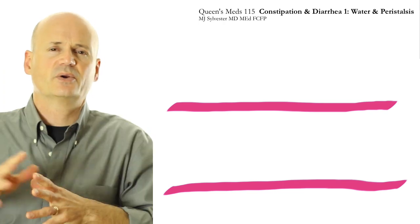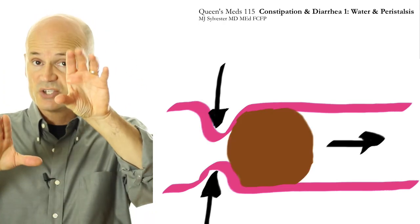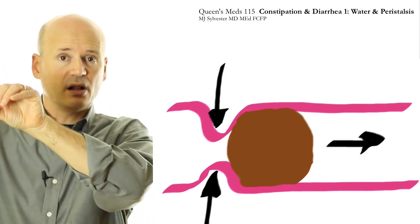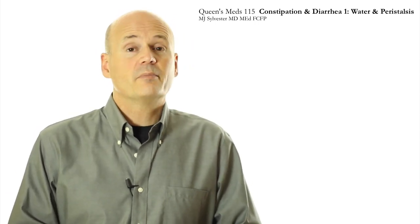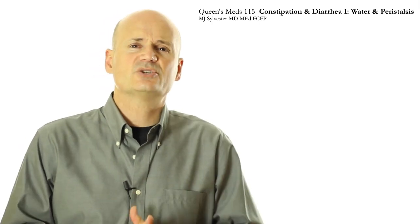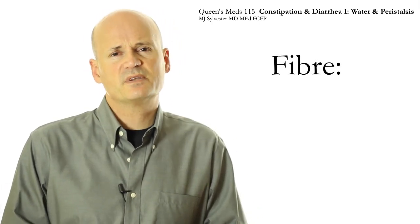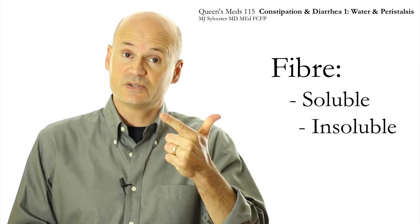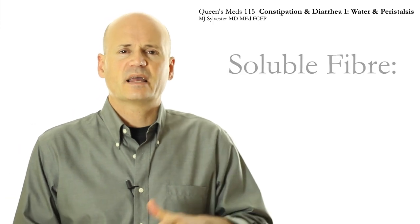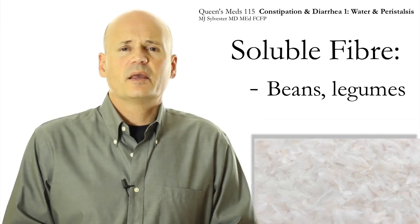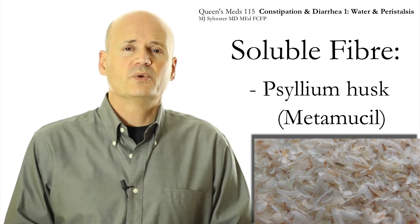Peristalsis — that coordinated muscular contraction that propels things along your intestine — works better with soft, large bulk. To keep bulk in your intestine, it needs to be indigestible, and that means fiber. There are two types of fiber: soluble fiber and insoluble fiber. Soluble fiber can be found in things like beans, legumes, and psyllium husk, otherwise known by the brand name Metamucil.